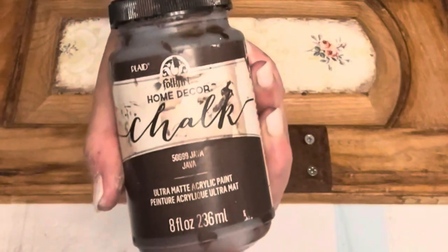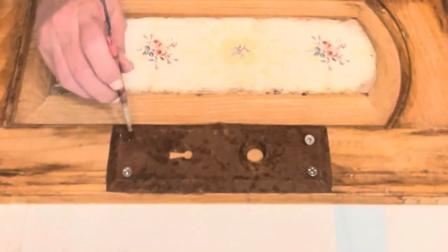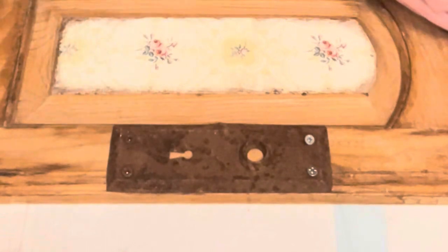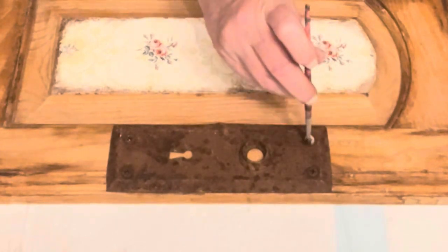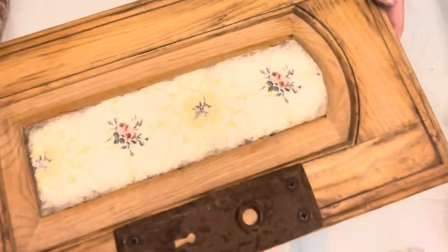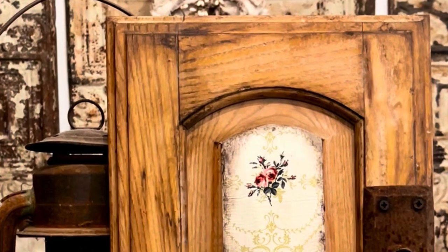Now, because these are silver, I want to make them match, so I used my Java chalk paint by FolkArt and just kind of dabbed some brown paint onto those silver screws. Then I gave it a nice blow-dry, and I absolutely am so in love with this piece.